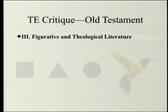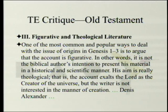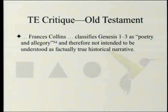One of the most common ways to deal with origins in Genesis 1 through 3 is to argue that the account is figurative — that it is not the biblical author's intention to present his material in a historical and scientific manner. His aim is really theological: the account exalts the Lord as creator, but the writer is not interested in the manner of creation. Denis Alexander exhibits that approach, and Francis Collins also classifies Genesis 1 through 3 as poetry and allegory, therefore not intended as factually true historical narrative.